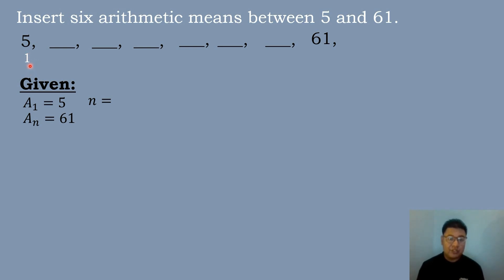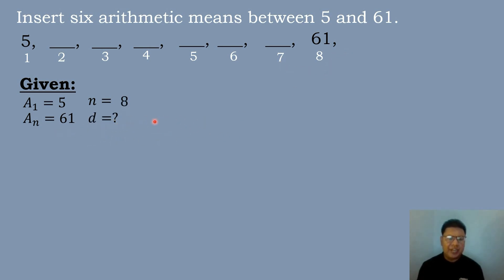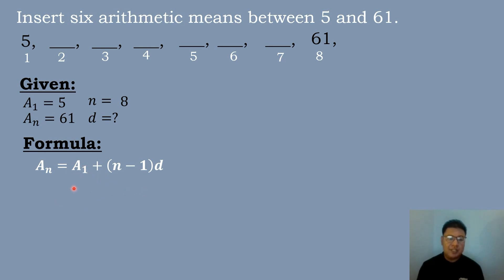So 5 is the first term, then we have the second, third, fourth, fifth, sixth, seventh terms, and 61 will be the eighth term. So n will be equal to 8. Then we will solve for the value of the common difference using the formula of the arithmetic sequence: a sub n is equal to a sub 1 plus quantity n minus 1 times the common difference.